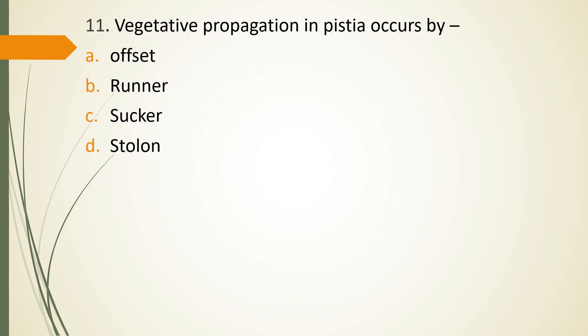Question 11. Vegetative propagation in pistia occurs by offsets, runners, suckers, or stolon. Correct answer is option A. Offset.